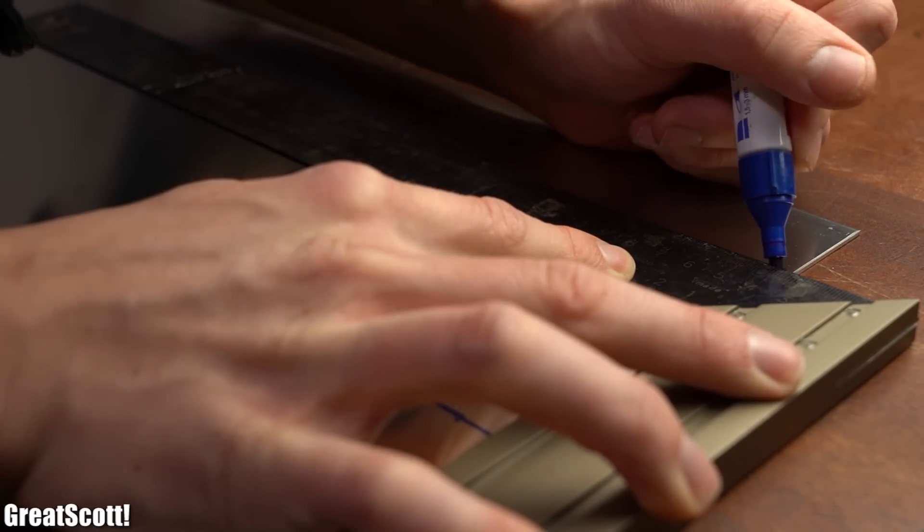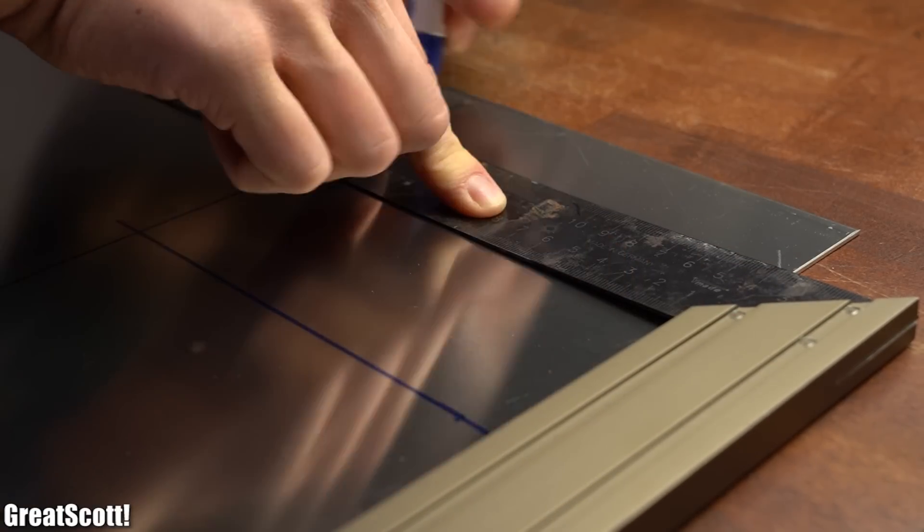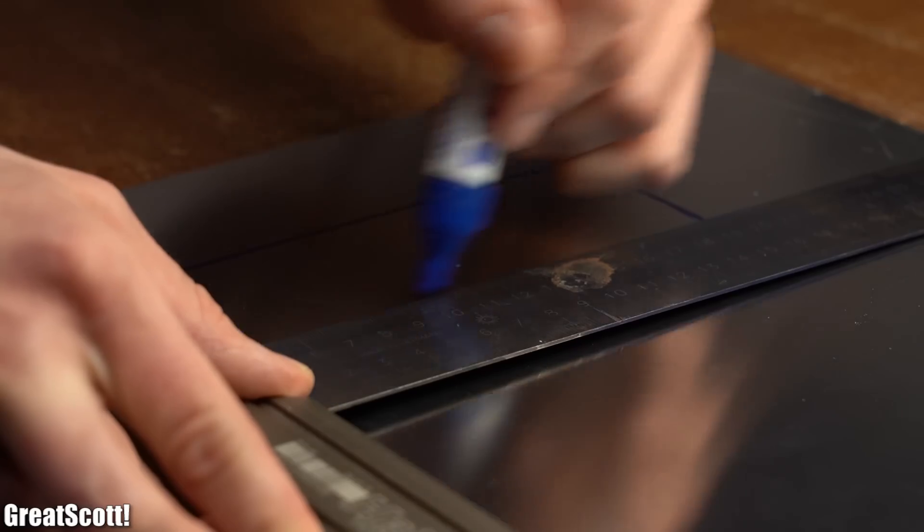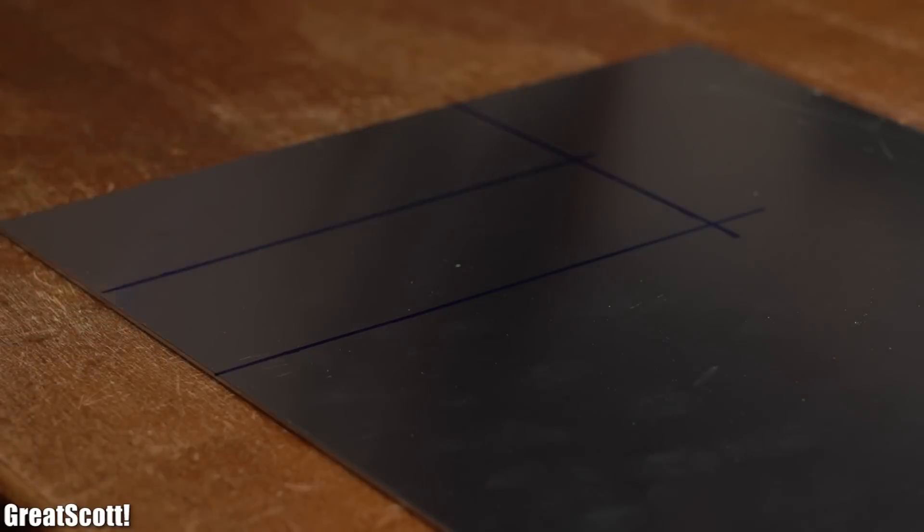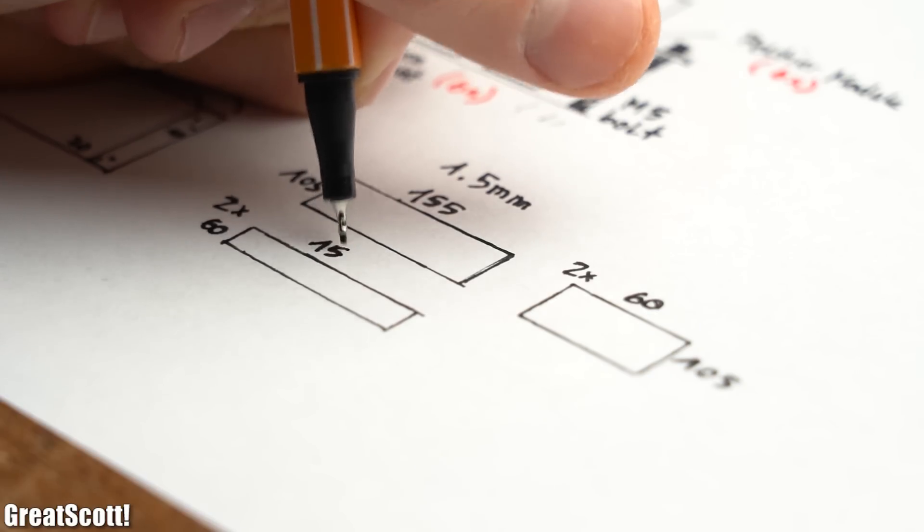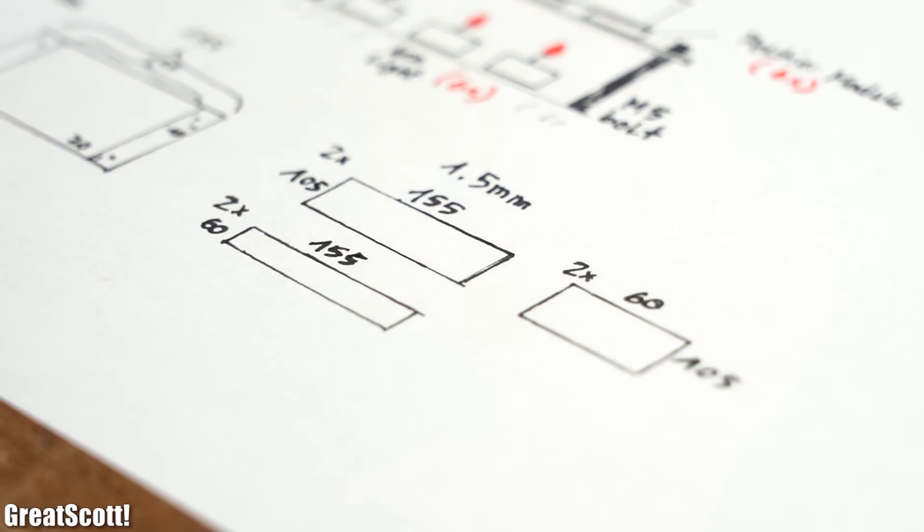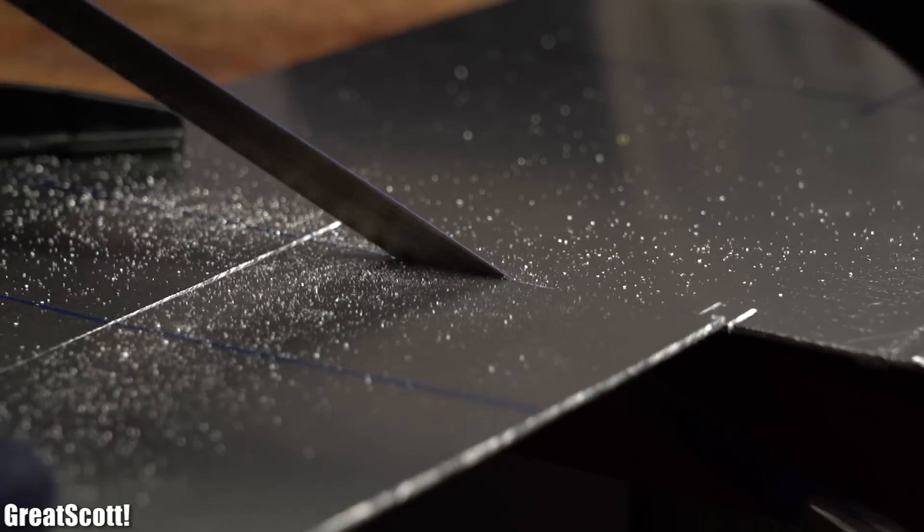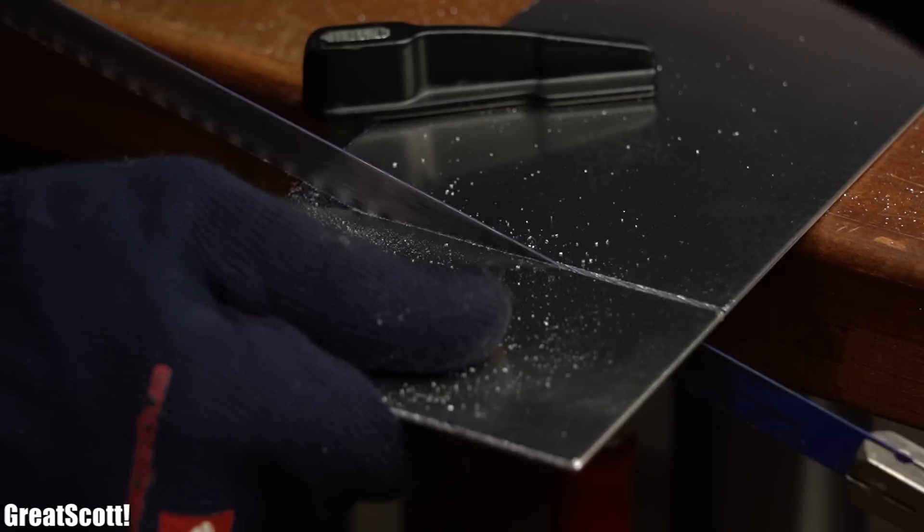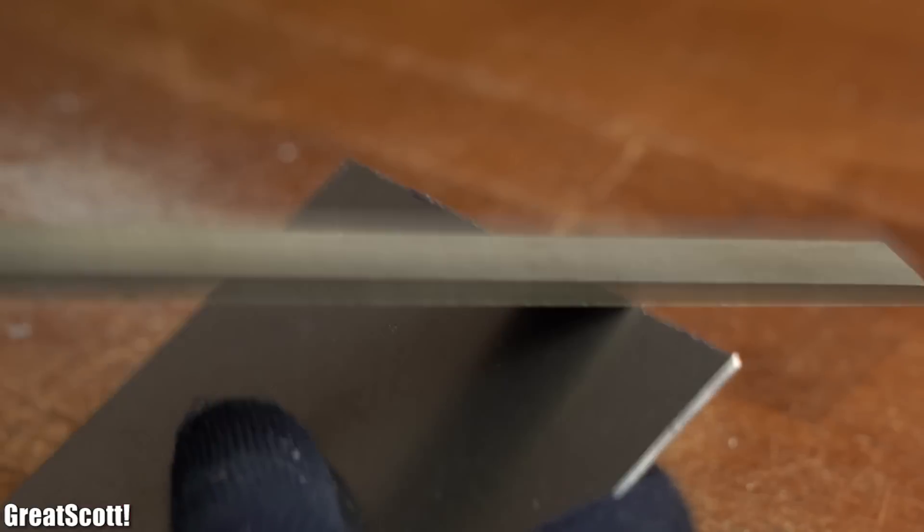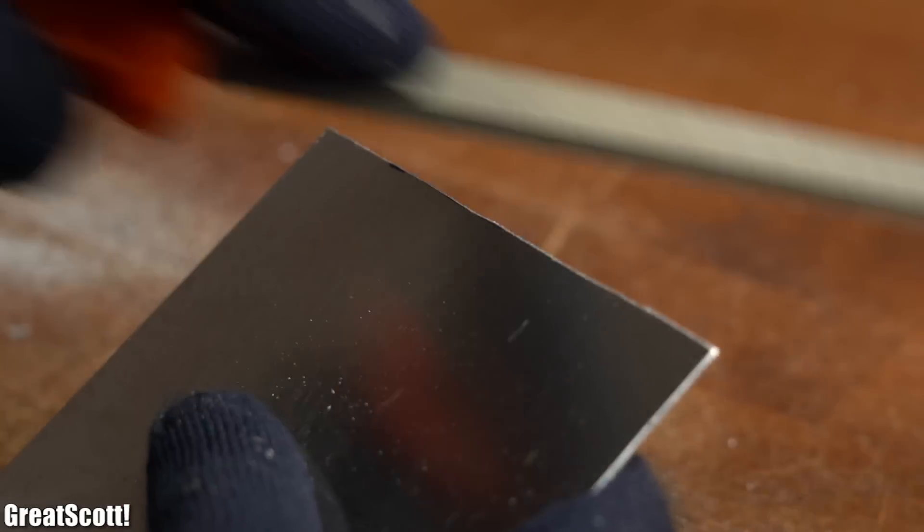Next I marked the outline for the cold side heatsink onto the thinner aluminum in addition to a few other outlines which were mandatory to later create the aluminum cooling box. So like before I used a handsaw to cut out those 6 pieces of aluminum whose sharp edges I then once again removed with a file.